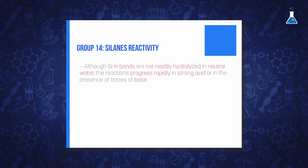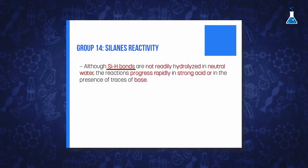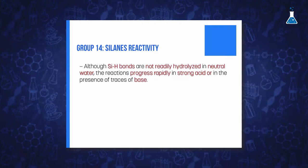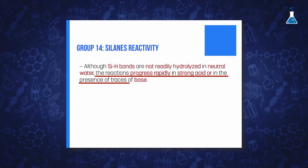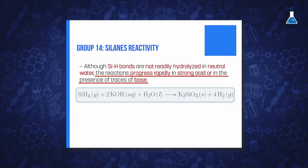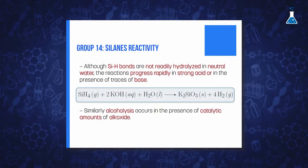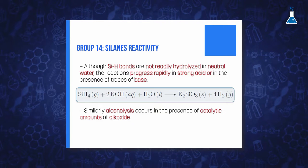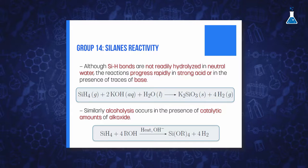Interestingly, whereas the silicon–hydrogen bond is not readily hydrolyzed in neutral water, especially for higher silanes, the reaction progresses rapidly in strong acid and in the presence of traces of base. In a similar way, the alkoxylation reaction can take place in the presence of a catalytic amount of alkoxide, as shown in the following equation.